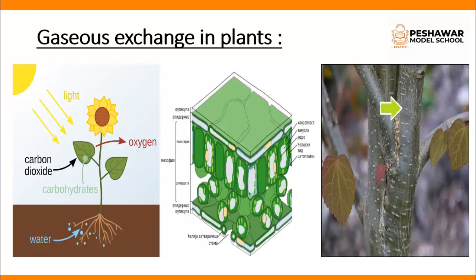Here we have diagrams of three parts of plants. In the first diagram, we can see a plant taking in sunlight, carbon dioxide, and water from the external environment. During daytime, the plants are releasing oxygen gas, because photosynthesis produces oxygen as a byproduct.